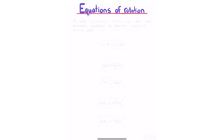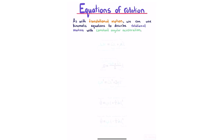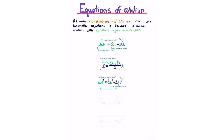Equations of rotation. As with translational motion, we can use kinematic equations to describe rotational motion with constant angular acceleration. The kinematic equations are the same, just with rotational values in place of the linear ones.